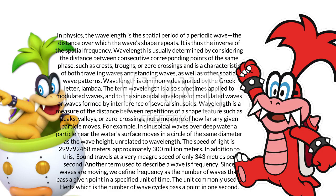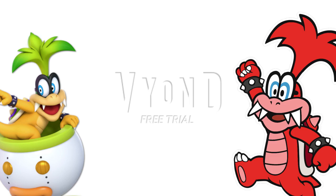For example, in sinusoidal waves over deep water, a particle near the water's surface moves in a circle of the same diameter as the wave height, unrelated to wavelength. The speed of light is 299,792,458 meters per second, approximately 300 million meters. Sound travels at a very meager speed of only 343 meters per second. We define frequency as the number of waves that pass a given point in a specified unit of time. The unit commonly used is hertz, which is the number of wave cycles passing a point in one second. A wavelength is defined as from one crest to another crest. A wavelength consists of a crest and a trough.